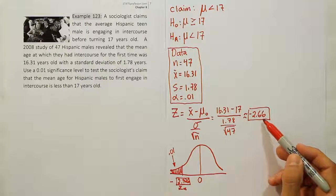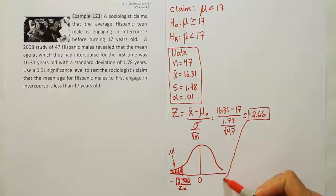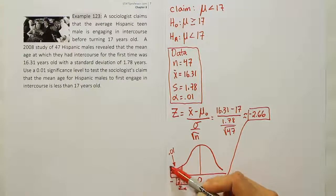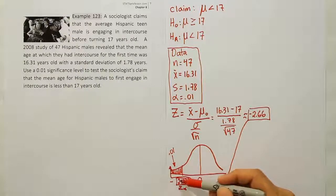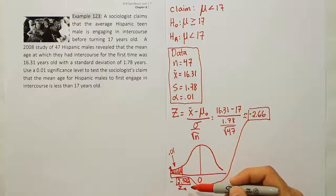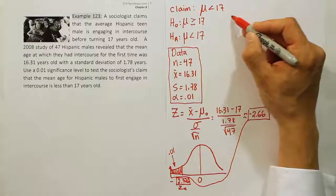And now we're going to look to see where this test stat lands. Well, if you look at it, it's going to, on this number line, fall clearly in the shaded area here. Because 2.66 is further to the left than negative 2.326. And because of that, we're going to conclude that we should reject the null hypothesis.